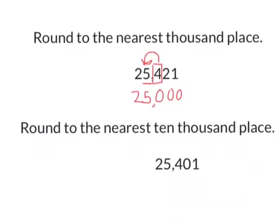Next, let's round to the nearest ten thousand place. So the first thing that we do is we find our ten thousand place and we underline that. We box in the digit to the right. This is our boss. The boss tells the underlined digit what to do.